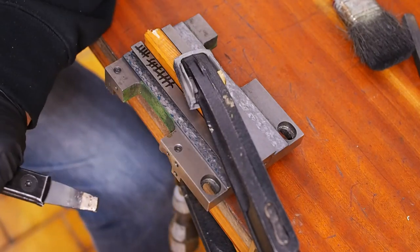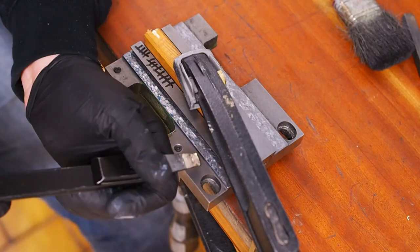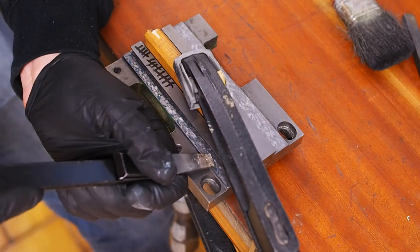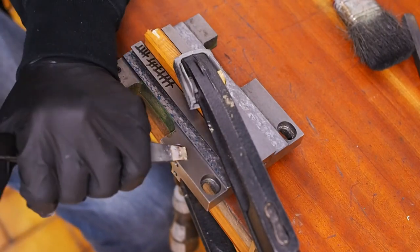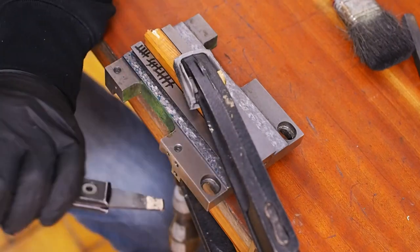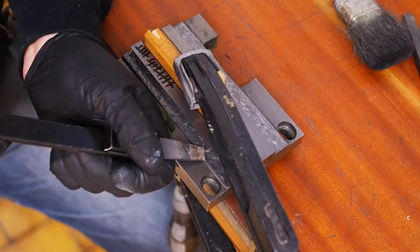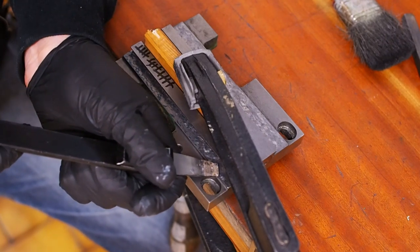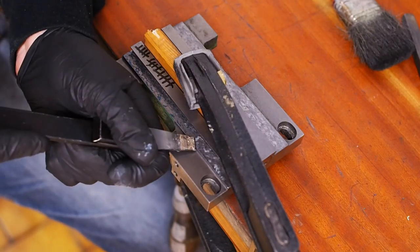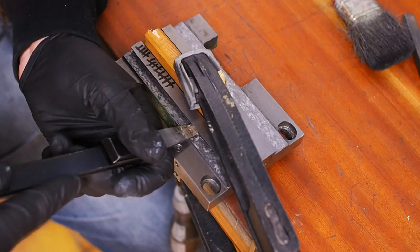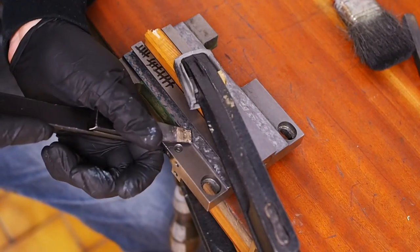By the way Andy Pugh's got one of the coolest lathes ever made, an English Holbrook, and he's done an amazing job of converting it to CNC. He's one of the main supporting guys on the Linux CNC forum so I would seriously suggest that you check out the link in the description below and have a look at the awesome work Andy's done including a complete iron casting of the hand wheel carriers for his CNC lathe.